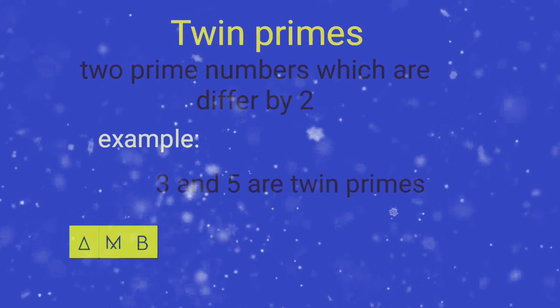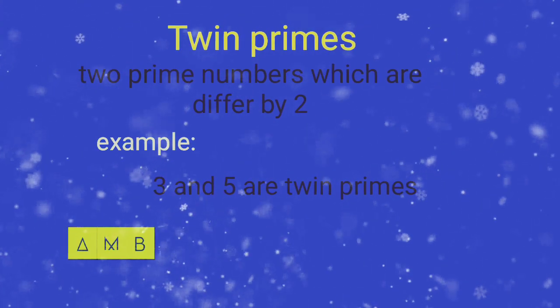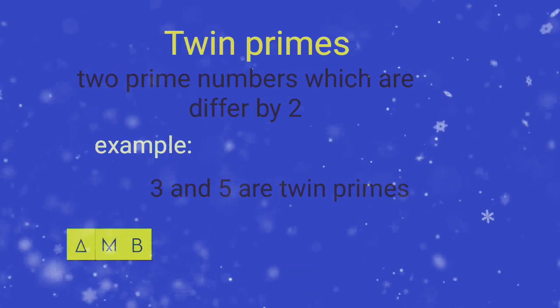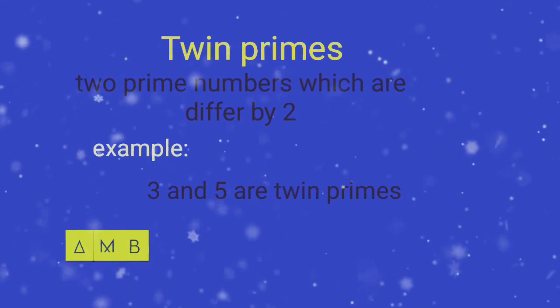Twin primes are two prime numbers which differ by 2. For example, the difference between 2 prime numbers 3 and 5 is 2, so 3 and 5 are twin primes.